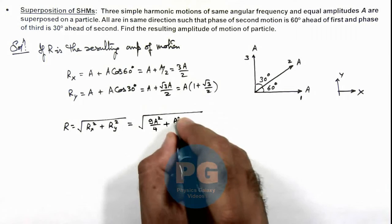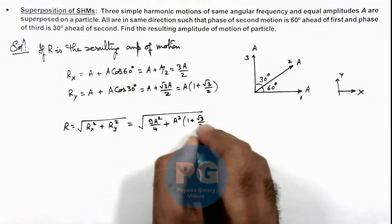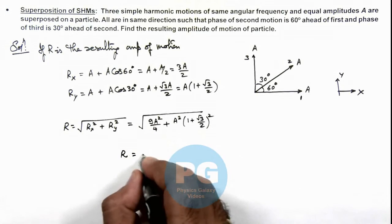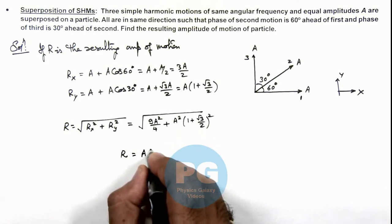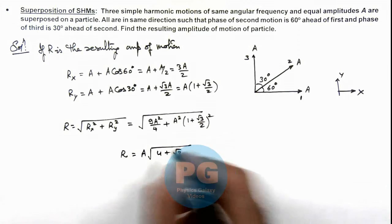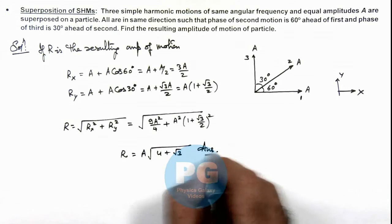We can write as 9A square by 4 plus A square 1 plus root 3 by 2 whole square. Further on simplifying we can get the value of R as A root of 4 plus root 3. I am leaving it for simplification for you and this will be the final result you will be getting.